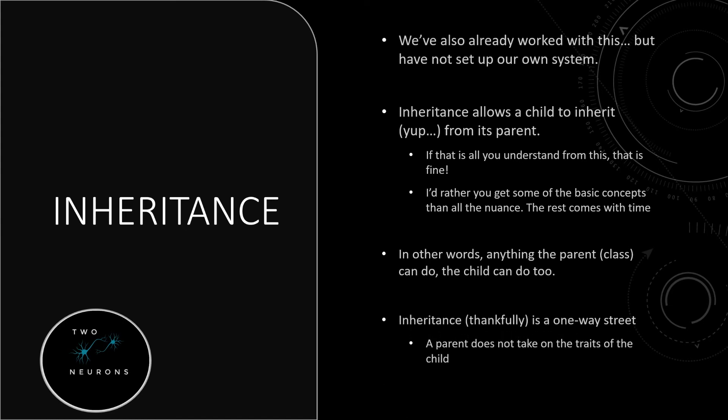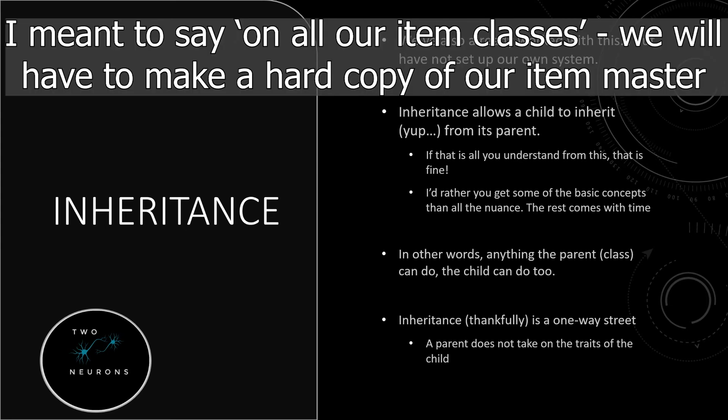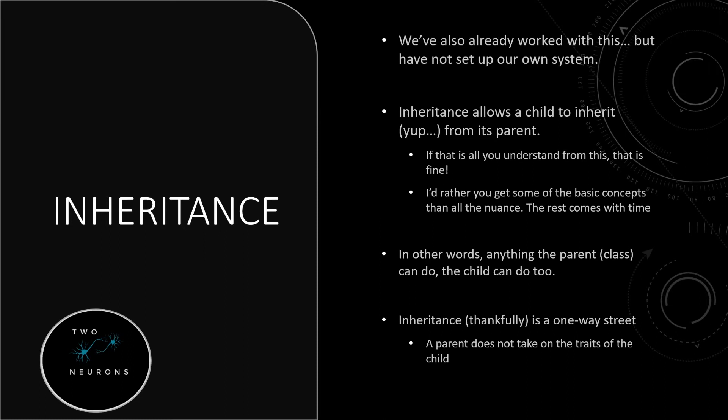This is a one-way street thankfully. Otherwise, anytime we add something to a child the parent class would get bigger and bigger. The way we're going to avoid doing a hard load on our item master and other classes is by getting the parent class instead. If it was a two-way street, things would become exponentially bigger until they didn't work. So only a child can take on the traits of a parent - a parent does not take on the traits of a child.